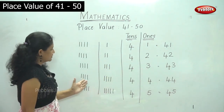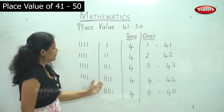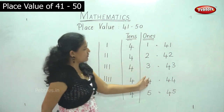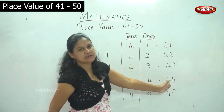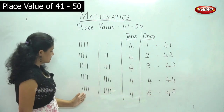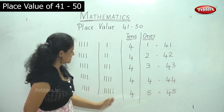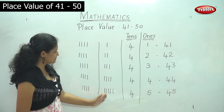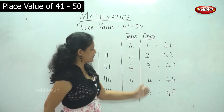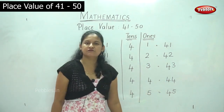Then 1, 2, 3, 4 — 4 tens — and 1, 2, 3, 4 — 4 ones. The number is 44. Next 1, 2, 3, 4 — 4 tens — and 1, 2, 3, 4, 5 — 5 ones. That gives the number 45.